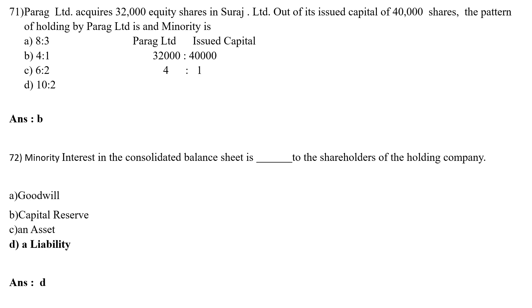Parag Limited acquired 32,000 equity shares in Suraj Limited out of its issued capital of 40,000 shares. The pattern of holding by Parag Limited is — Parag Limited holds 32,000 out of 40,000 shares of Suraj Limited. The ratio is 32,000:8,000 = 4:1. The correct answer is Option B — 4 is to 1.